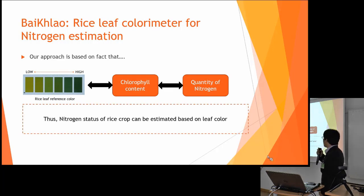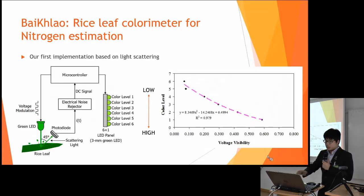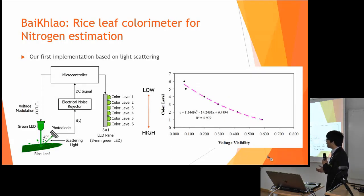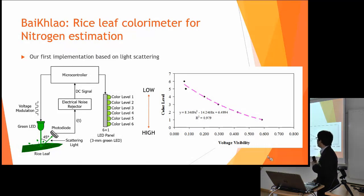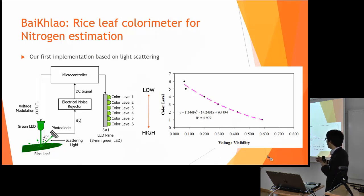Nitrogen content of the rice crop can be estimated from the leaf color alone. This is our first implementation — about seven years ago, before the rise of the mobile phone era. We used a green LED and a microcontroller to detect the leaf effect from the rice leaf, and we can classify the number of nitrogen into six levels.